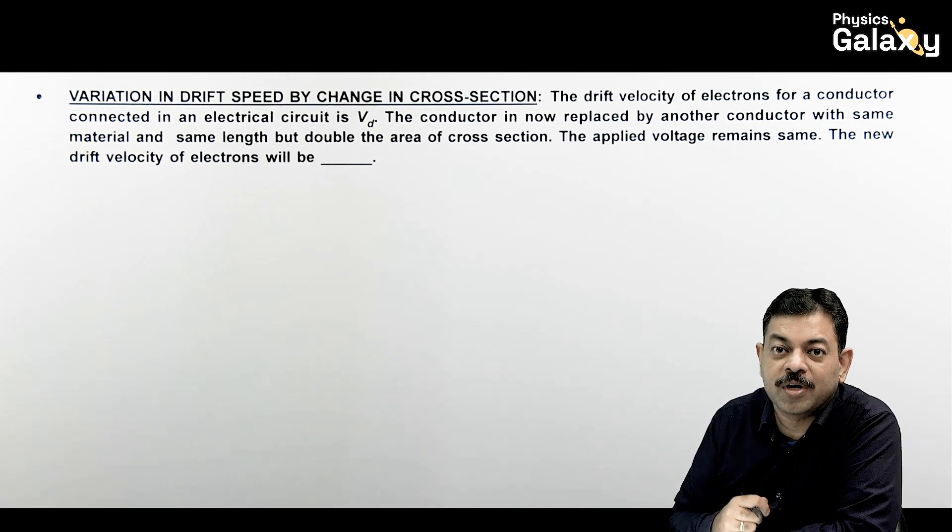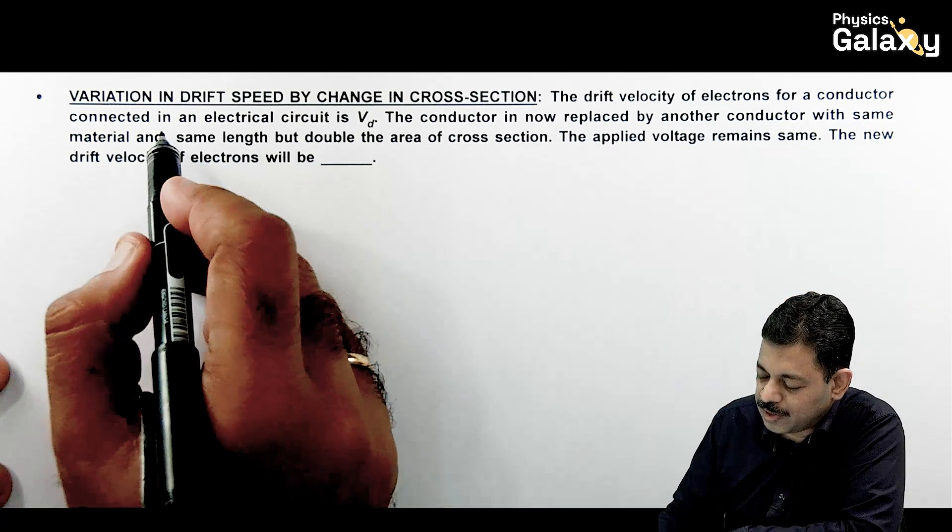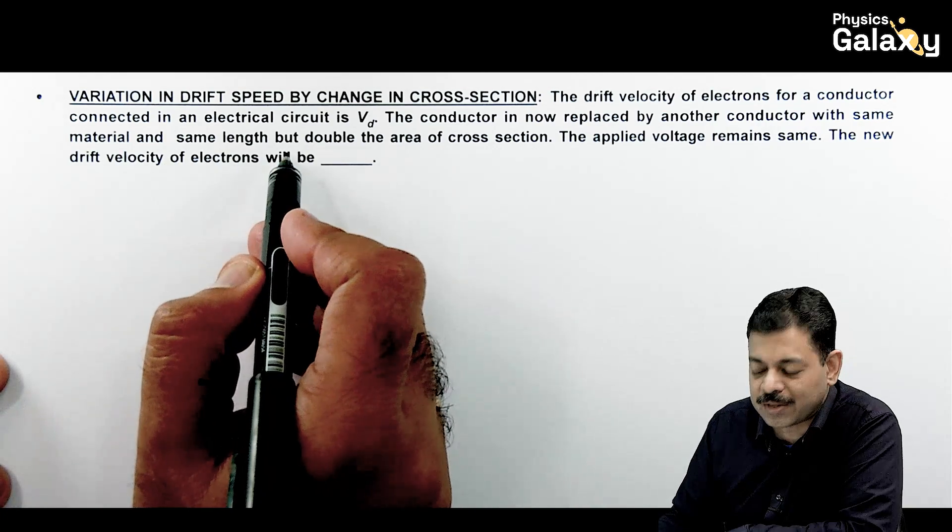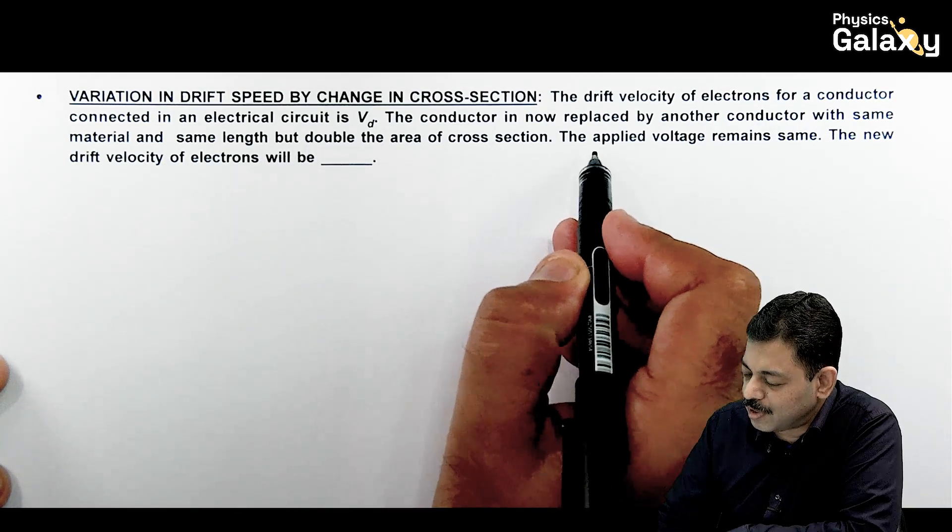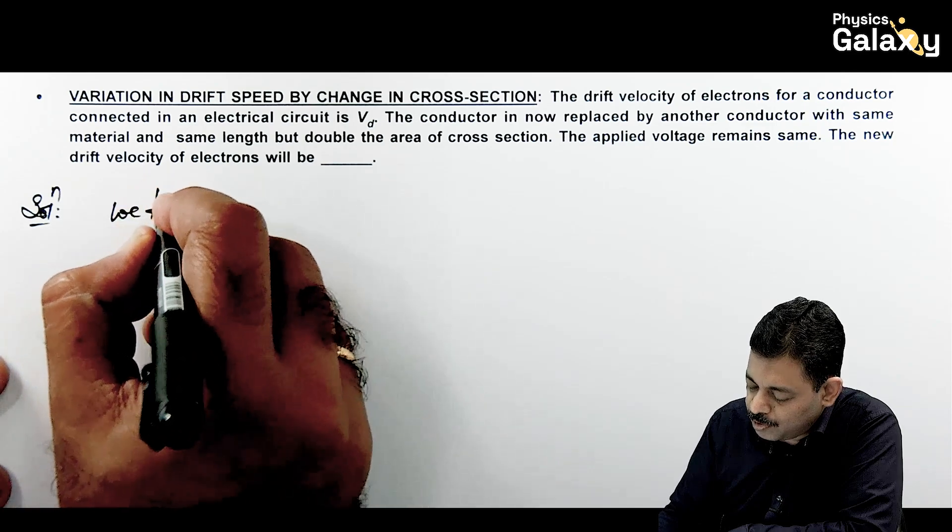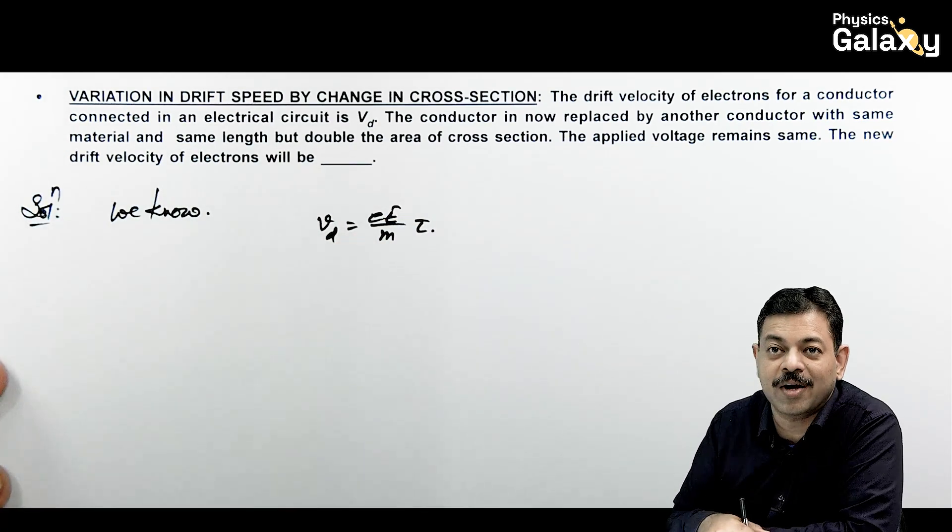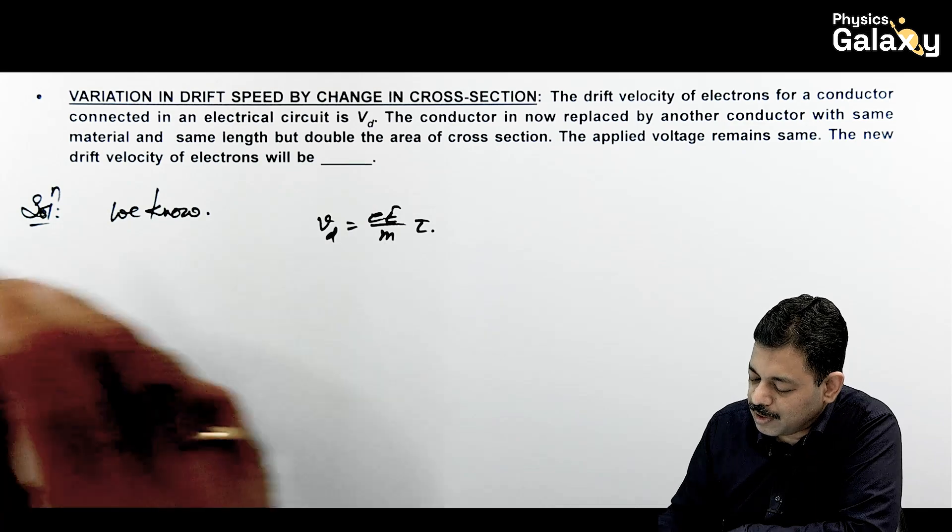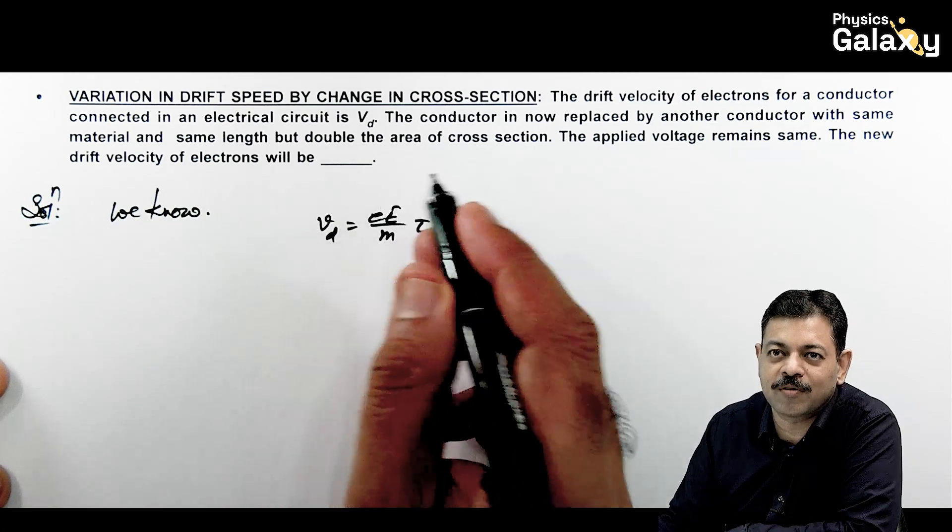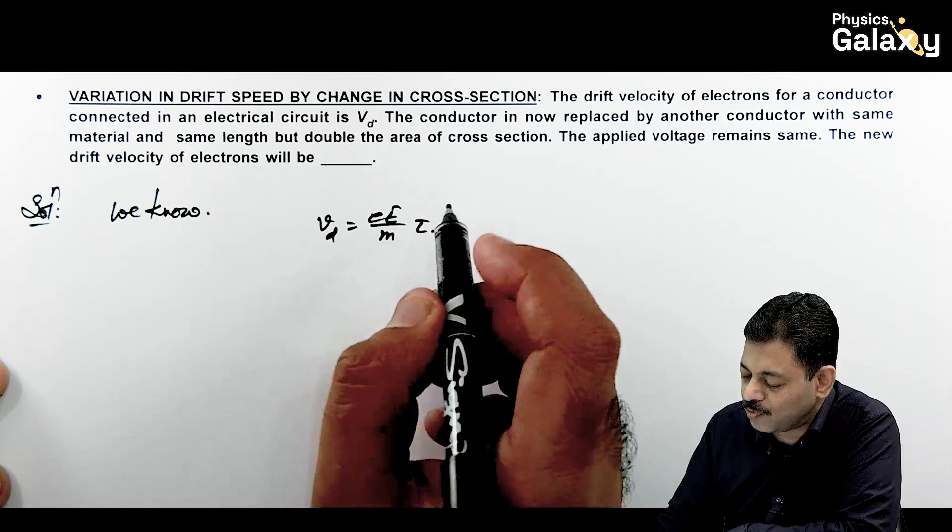Let us talk about some factors upon drift speed. It says the drift velocity of electrons for a conductor connected in an electrical circuit is Vd. The conductor is now replaced by another conductor with same material and same length but double the area of cross section. The applied voltage remains same and the new drift velocity of electron we want to calculate. Here we know drift speed Vd can be given as (eEτ)/m where E is the applied electric field which depends upon the voltage. If we have the same length, the electric field will remain the same. This is not going to change because electric field is voltage applied upon the length of conductor. Charge of electron and mass of electron will remain same. Relaxation time won't be affected by area of cross section.